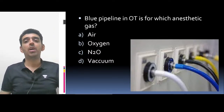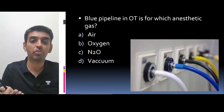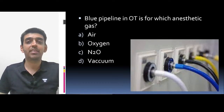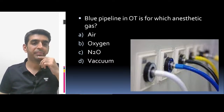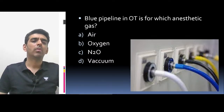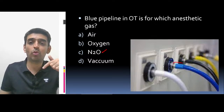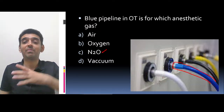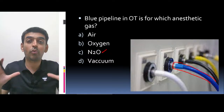Moving on to the next question: blue pipeline in OT is for which anesthetic gas — air, oxygen, nitrous oxide, or vacuum? Most of you have given the correct answer. The blue color pipeline is for nitrous oxide. This was asked again this year. Previously they asked about cylinder colors, but now they are even asking about pipeline colors.